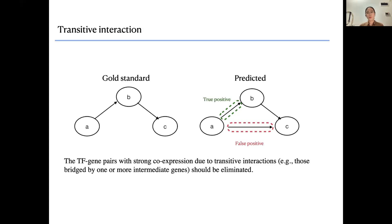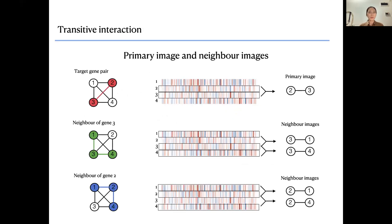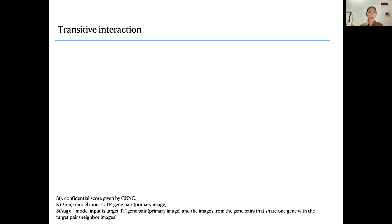We propose to include more information about neighbors in the model. For a network of four nodes, if we want to predict the interaction between gene two and three, the images generated from gene two and three expression are the primary images. We can also consider the neighbor images — for example, the expression of gene three with gene one, and gene three with gene four — as neighbor images. Including both primary and neighbor images improves performance.